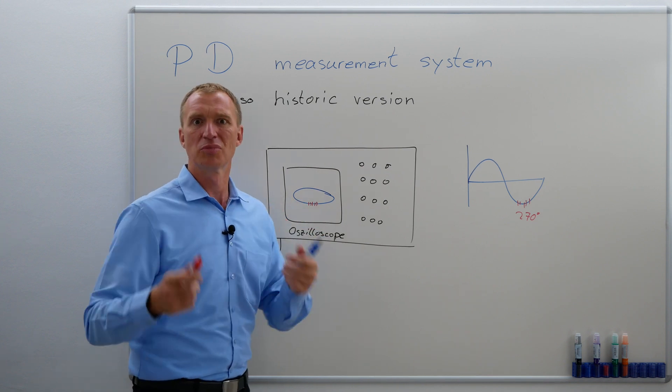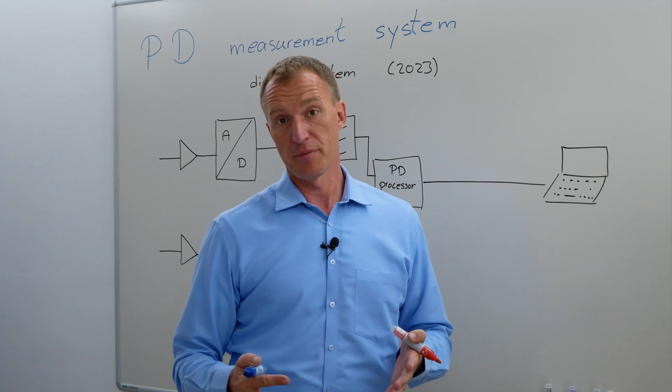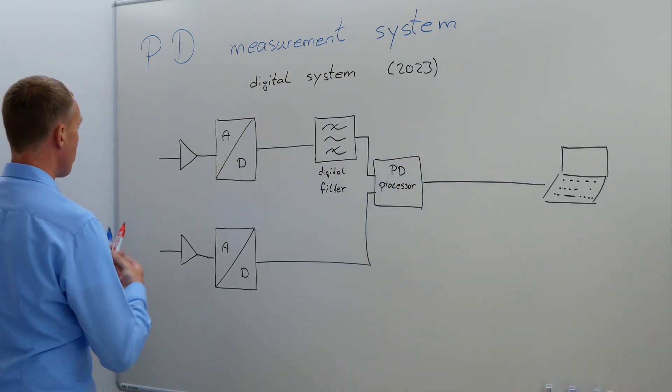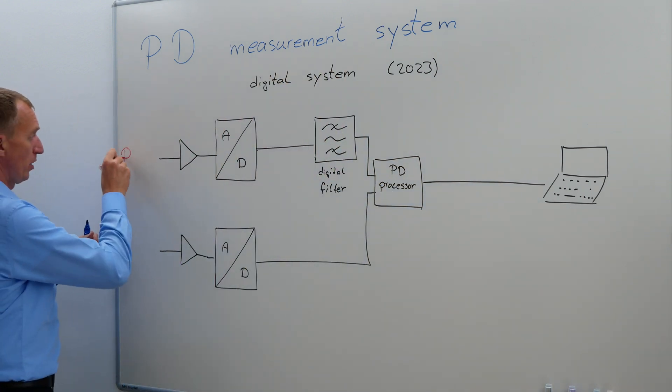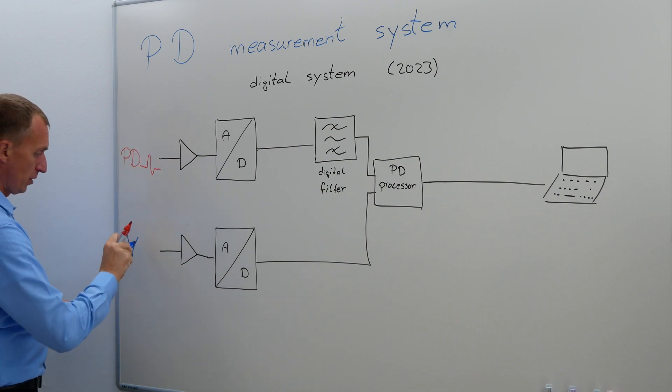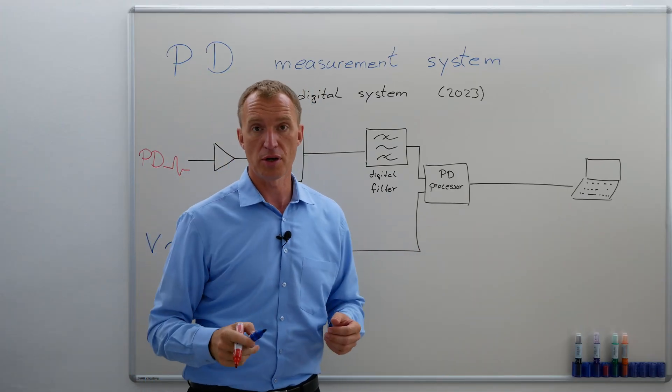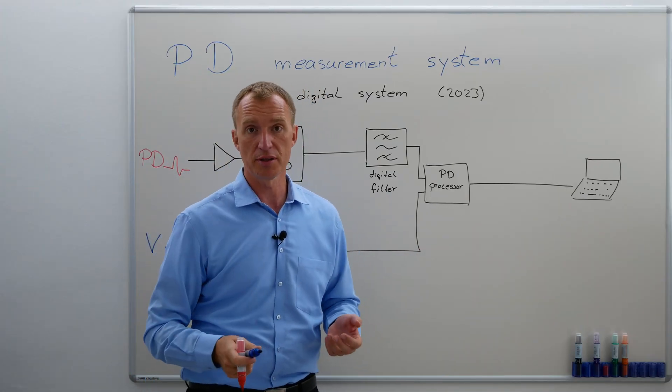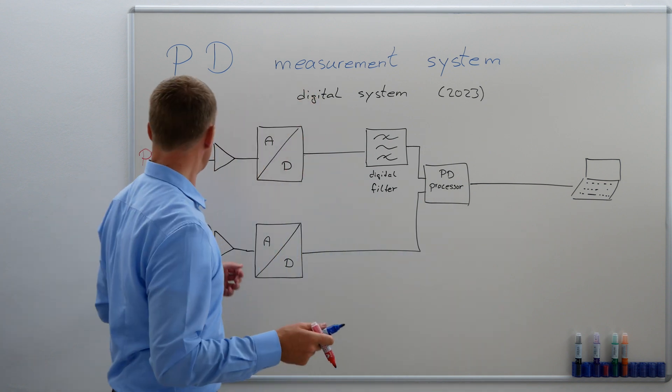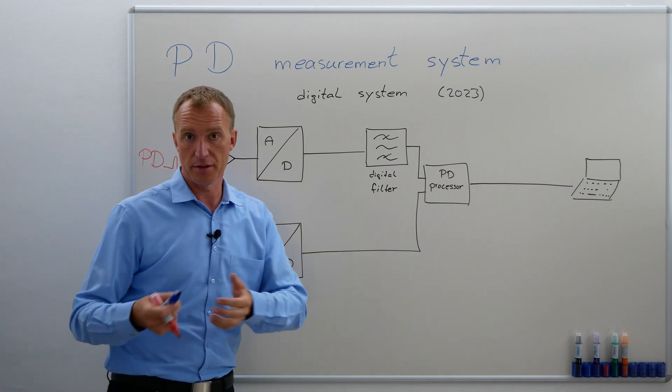So now let's move to the current version. Using a digital PD measurement system has a lot of advantages. Let's talk about some of them. So we're having two inputs and one of them would be PD, right? And the other one would be voltage. And the majority of our partial discharges are usually done with AC voltage, usually somewhere in the area of 50 or 60 Hertz.